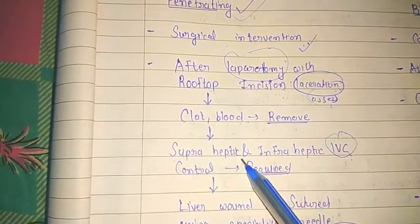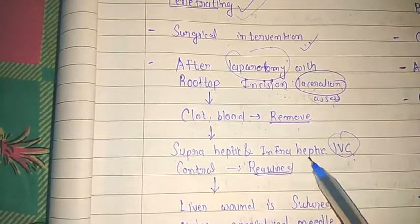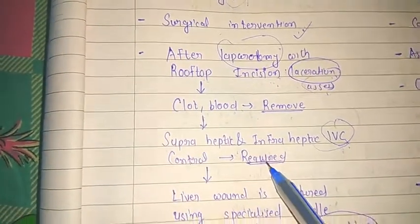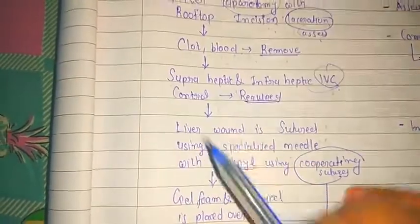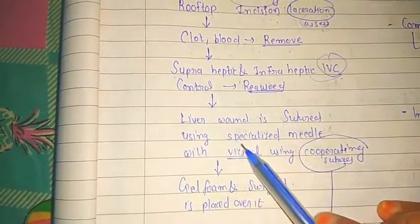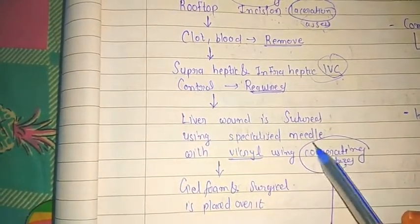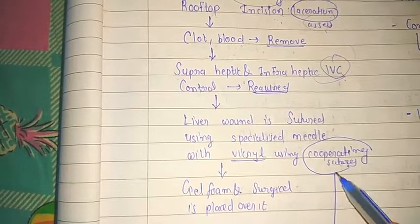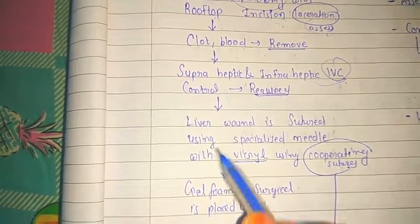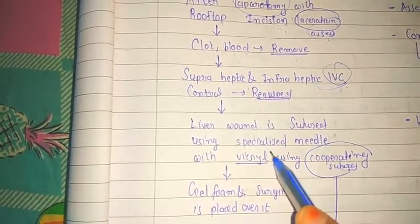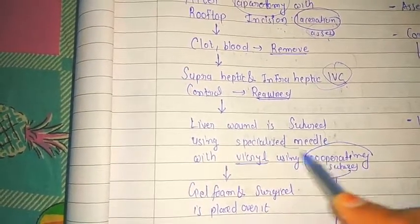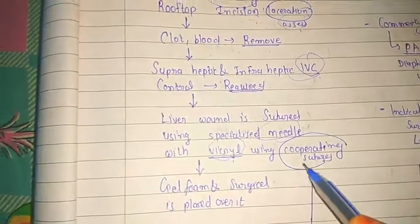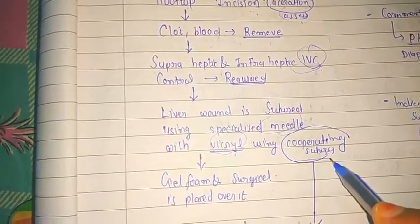Superior hepatic and inferior vena cava control is required. The liver wound is sutured using a specialized needle with Vicryl, using a co-apting suture. The liver wound should be sutured using a specialized needle, and Vicryl is the suture material. What is a co-apting suture?